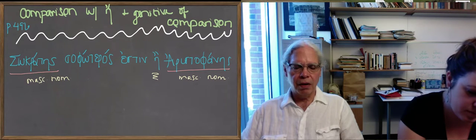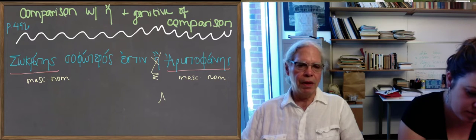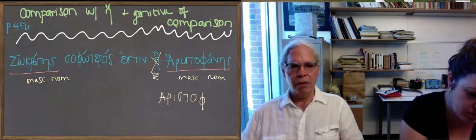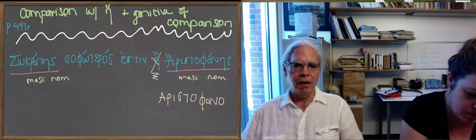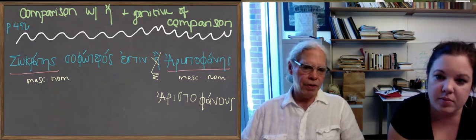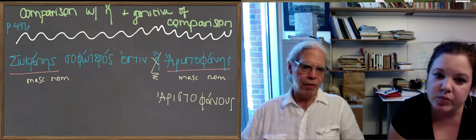And put the second term being compared, in our sentence it's Aristophanes, and put him in the genitive case. So then you have Socrates, sophoteros estin, no word for than, Aristophanes in the genitive of Aristophanes. You put the compared word in the genitive.